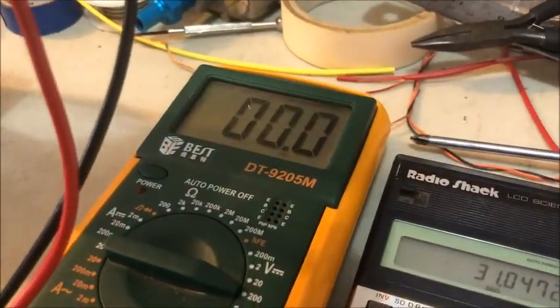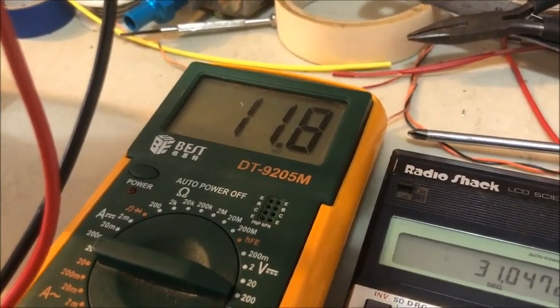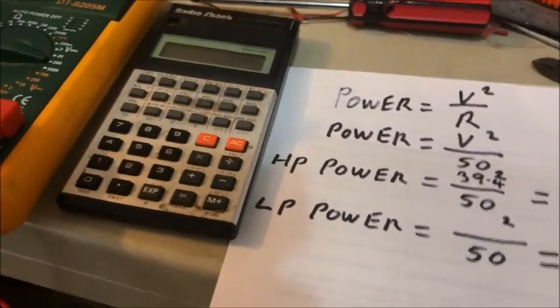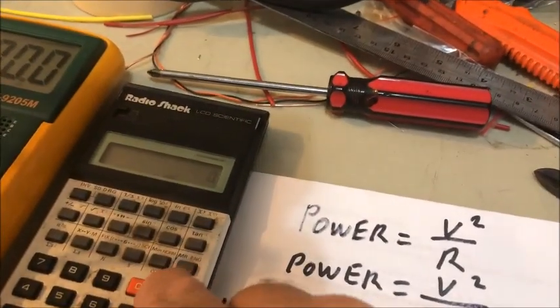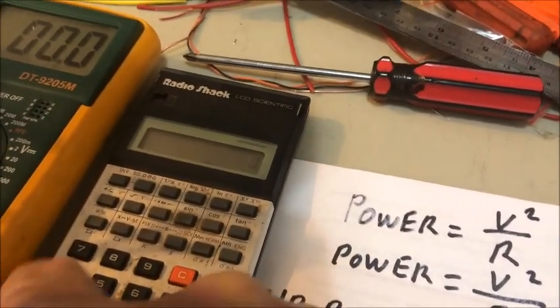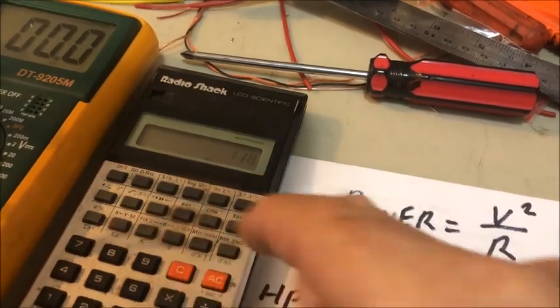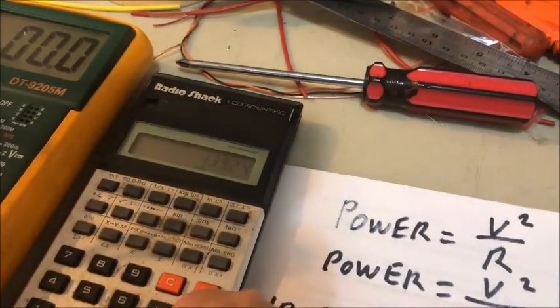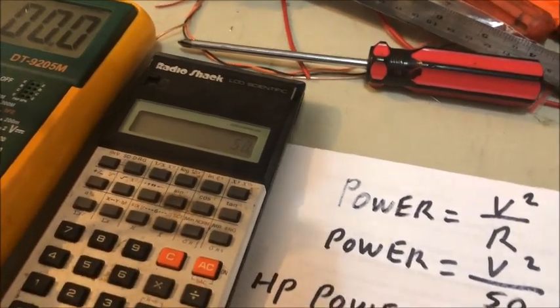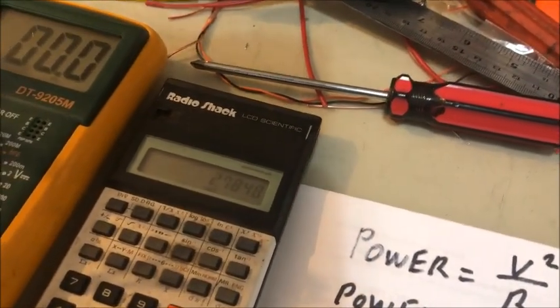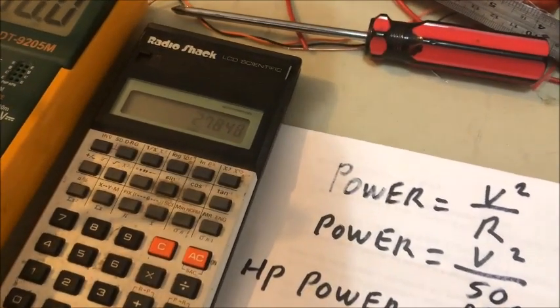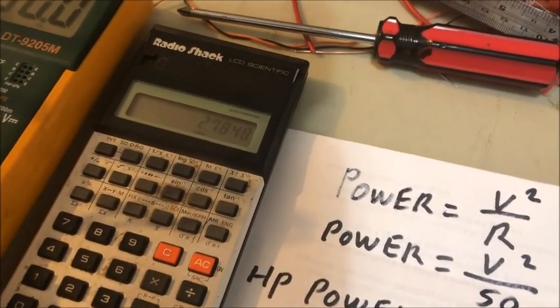Okay, so again, hitting the transmitter. 11.8 volts. Let's put that into the formula. 11.8 volts. So here we go. 11.8 volts. Inverse square. Divided by 50. Equals 2.7. 2.7 watts.